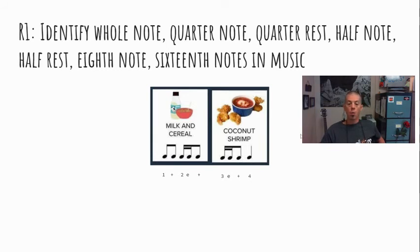No 'a,' because there's no other sixteenth note. And then beat four. So this would be one-and, two-E-and, three-E-and, four. Milk and cereal, coconut shrimp.